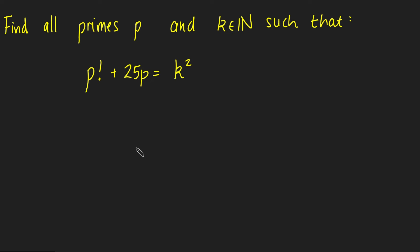Hi, thanks for joining me. Today I've got a quick number theory problem. We want to find all prime numbers p and positive integers k such that p factorial plus 25p is k squared.